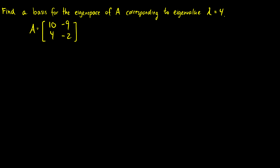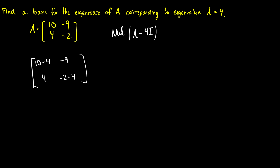Let's find a basis for the eigenspace of A corresponding to the eigenvalue lambda equals 4. So we're finding the null space of A minus 4I. We have the matrix A here, so I'm just going to subtract four times the identity matrix. This will give us 10 minus 4 in the top-left, negative 9, 4, and negative 2 minus 4. So 10 minus 4 is 6, and negative 2 minus 4 is negative 6.